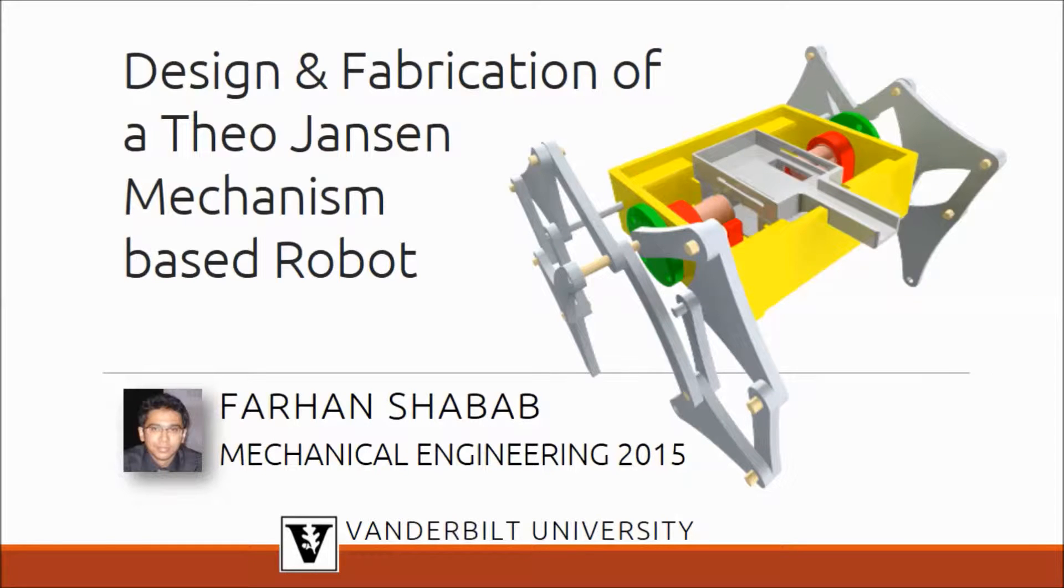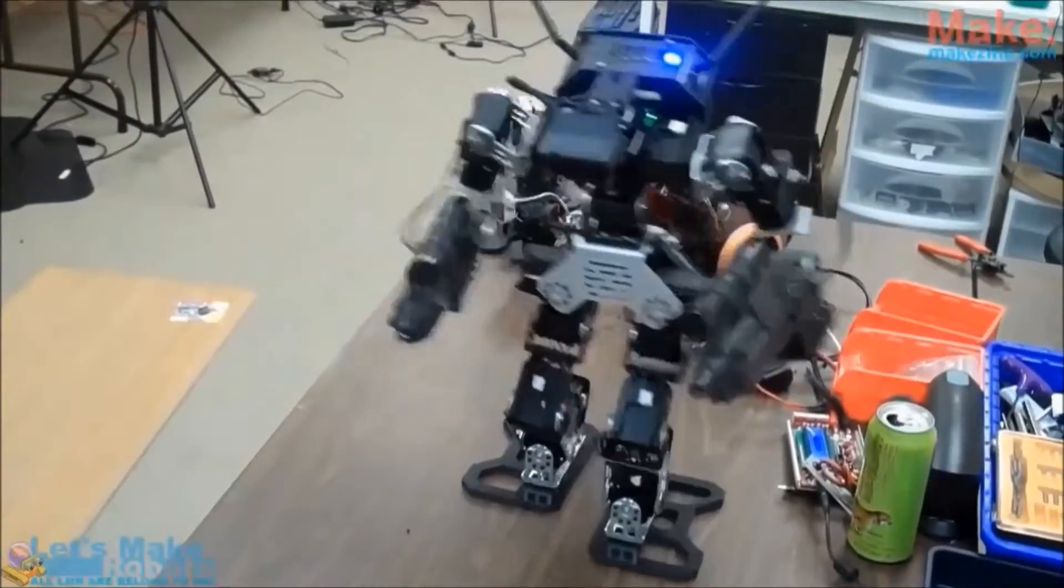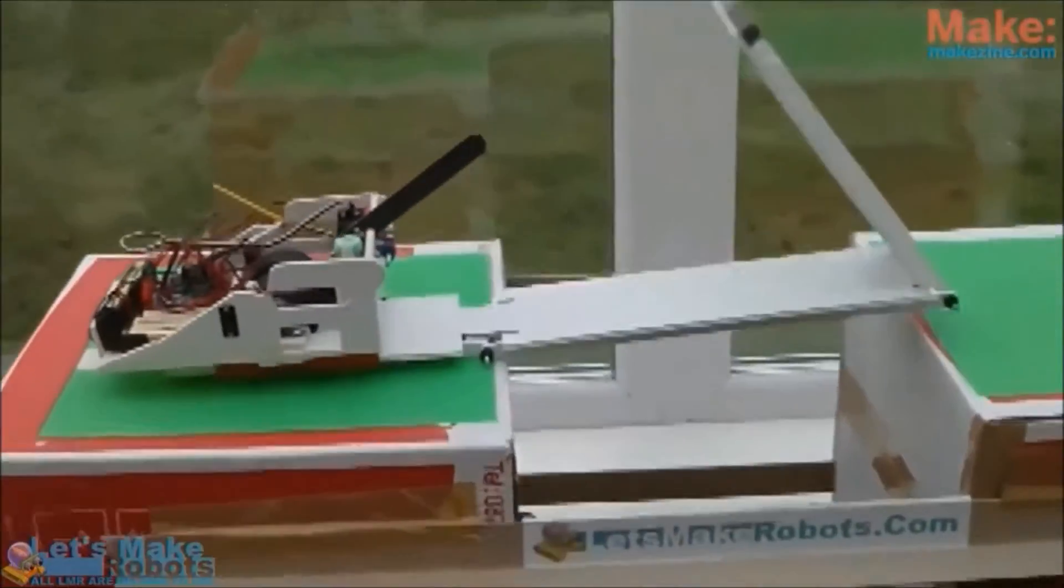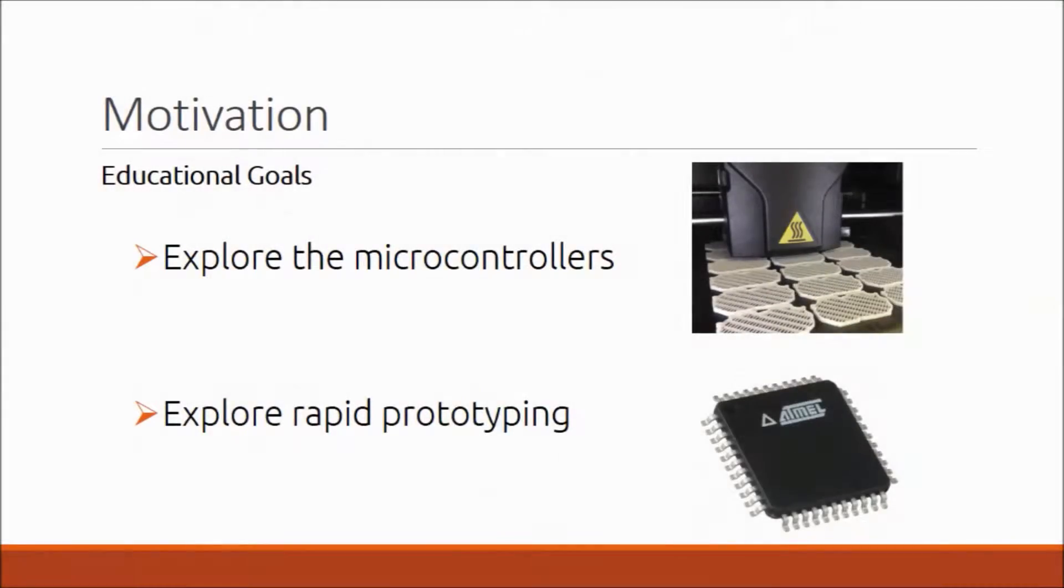The project was to build a hobby robot that used a slightly complex mechanism and was controlled through a microcontroller. The robot had to be a rapid prototype. A lot can be learned from the field of amateur robotics, and getting into such a project served two educational goals: to learn the use of a microcontroller and explore rapid prototyping.